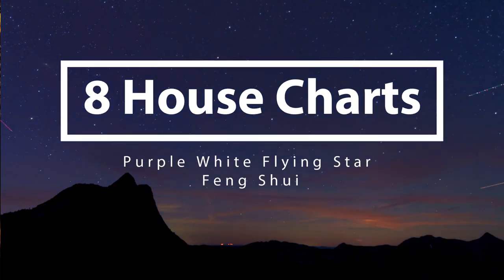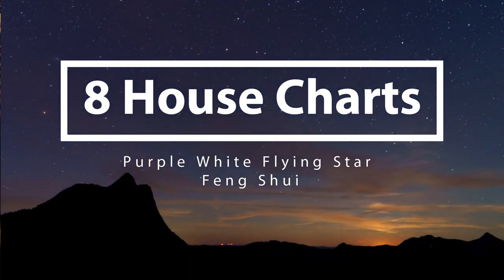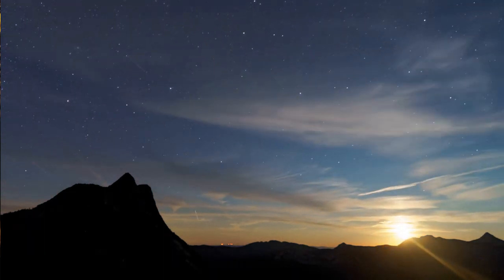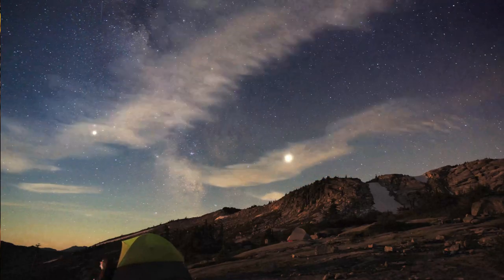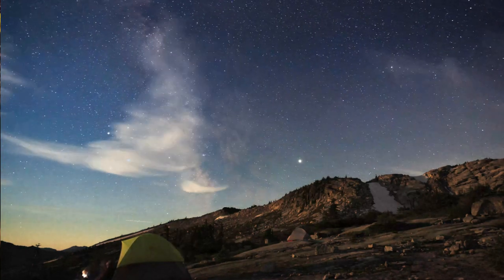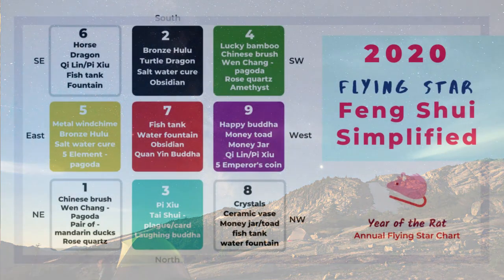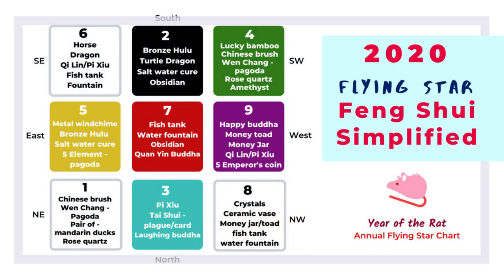Welcome back to Picture Healer channel for feng shui and Chinese metaphysics. Today we want to learn eight basic house charts based on the purple white flying star feng shui. We use the annual flying star feng shui chart every year for setting up our feng shui — that chart changes every year — and we also have a monthly flying star chart for more detailed information every month.